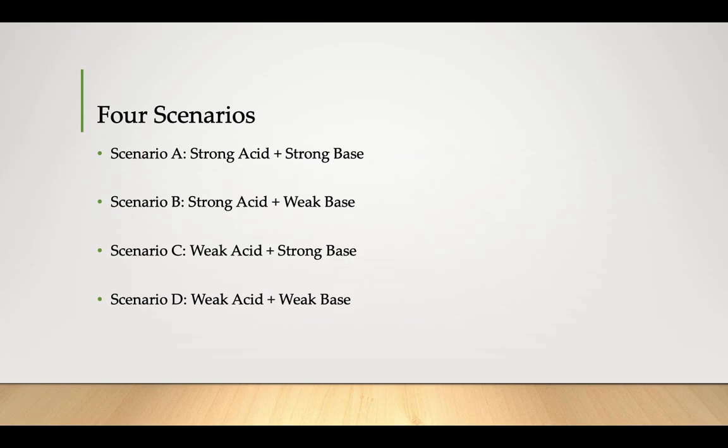Our four scenarios: you could have a strong acid-strong base, strong acid-weak base, a weak acid-strong base, and a weak acid-weak base. What you were seeing beforehand was that the pH at the equivalence point for a strong acid-strong base was always going to be 7 because your products are water and a salt whose cation and anion don't have any impact on the pH.